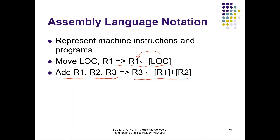A major limitation of assembly language is that it is not portable — an instruction written for one processor cannot be used with another processor. Assembly language is machine-dependent. To provide a better and more flexible programming environment, high-level languages like C, C++, and Java were developed, which are machine-independent.